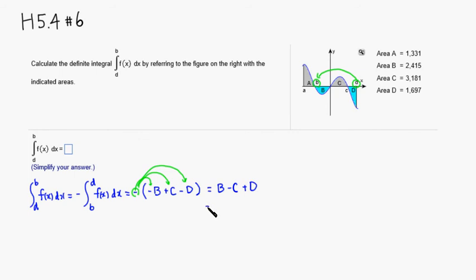B is given as 2.415, minus C is 3.181, and D is 1.697.